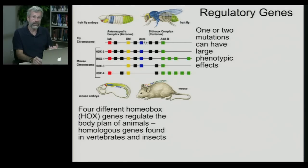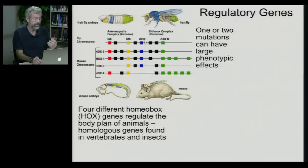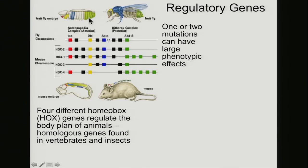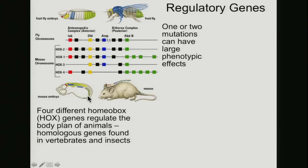That means there are homologous homeobox genes found both in vertebrates, insects, and just about everything else. One of these affects the tail end of an insect larva, and it also affects the mouse embryo at the tail end, which ultimately grows up to be the tail end of the fruit fly and the tail of the mouse. This red one has impacts on the head, both in the fly and in the mouse. Here are these four different homeobox genes and the different parts of the body that they affect.